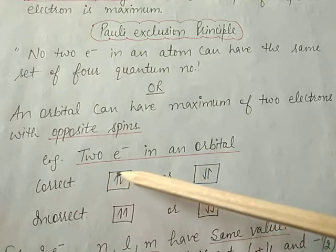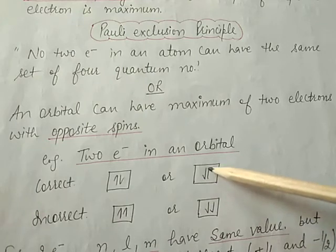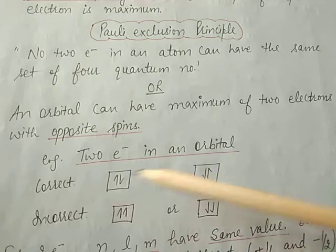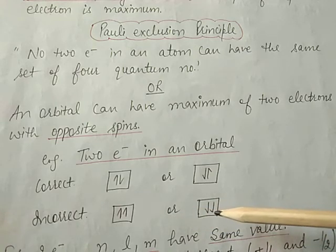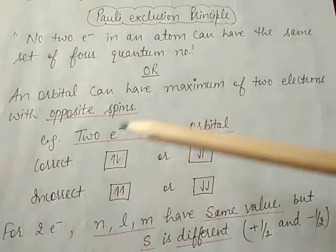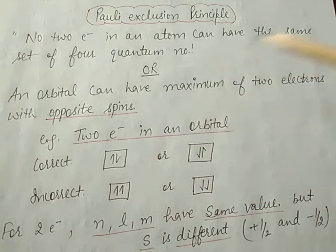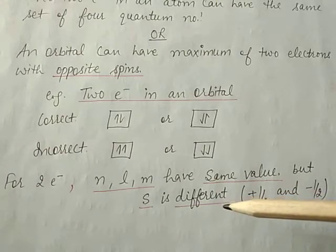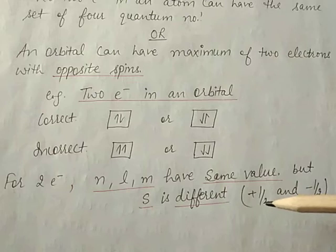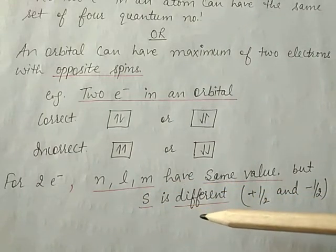For example, two electrons in an orbital: one has parallel spin and another has anti-parallel spin (opposite spins). Incorrect configurations are when both are parallel or both are anti-parallel. The maximum of two electrons are filled with opposite spin, giving spin +1/2 and -1/2, totaling zero. For two electrons, n, l, and m have the same values, but the spin quantum number s is different — either +1/2 or -1/2.